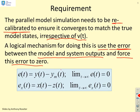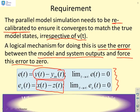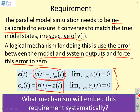This is what we want. We want the error between the process and the model, and the state error between the process state and the model state. We want both of those to go to zero. Because logically we want to find x of t and to find x of t reliably we need z of t to tend to x of t. So what mechanism will embed this requirement systematically?